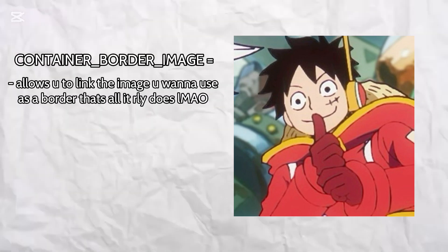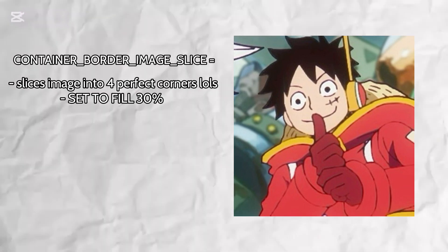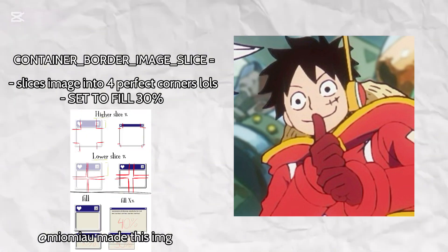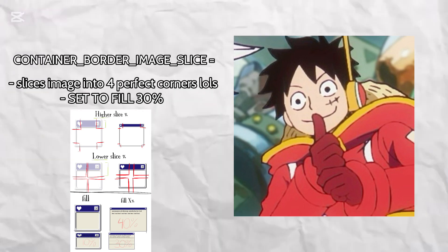How do you add a border? This one's a bit tricky, so follow carefully. Start with the container border image code — this allows you to link the border, which is an image. Then add container border image slice — this command defines where your border slices to create the four perfect borders. For example, the border in this example is perfectly aligned so it won't break off or split.